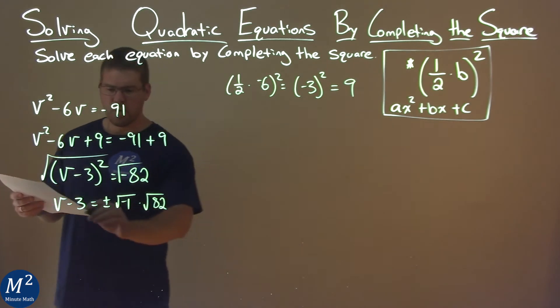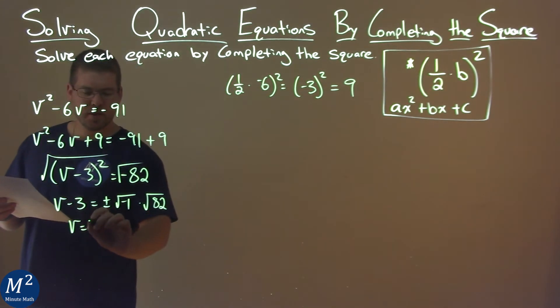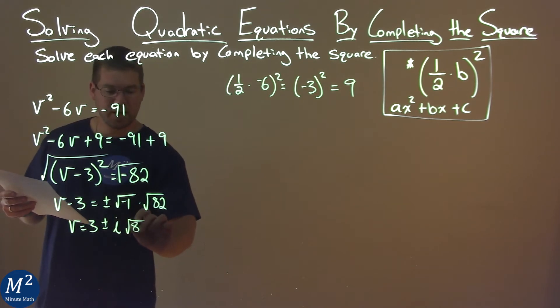Well what do we know about the square root of negative 1? That's i. So we add 3 to both sides and we have v equals positive 3 plus or minus i times the square root of 82.